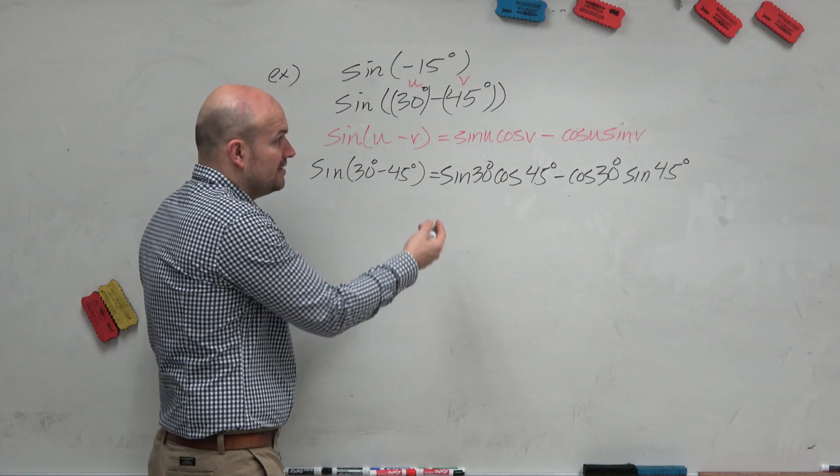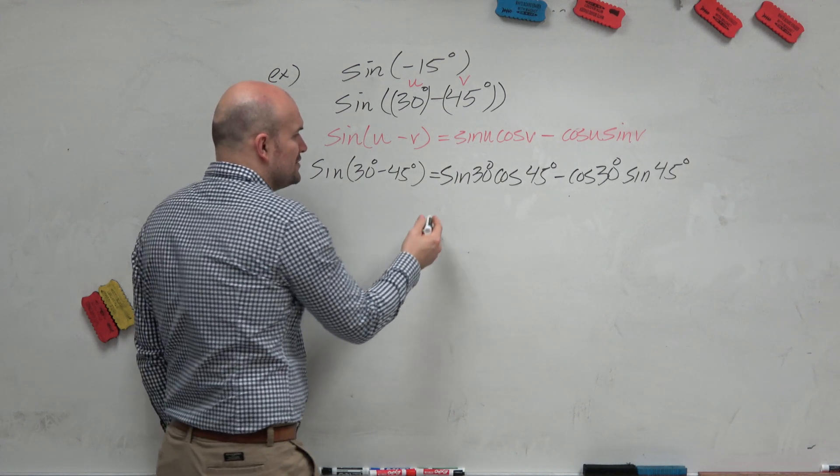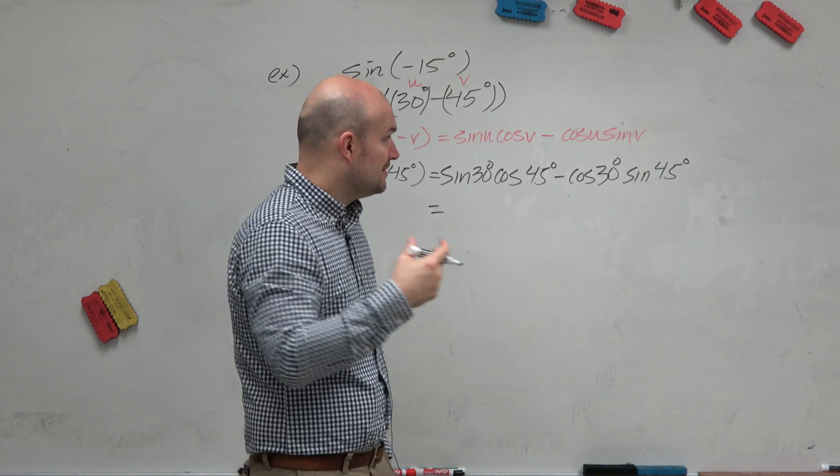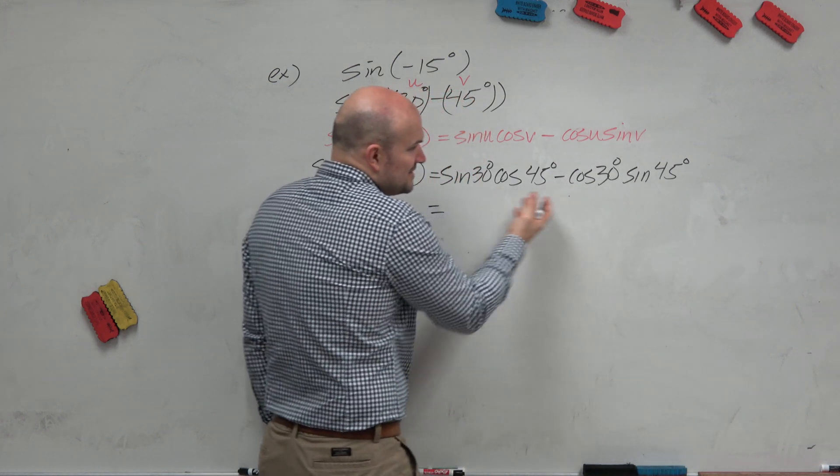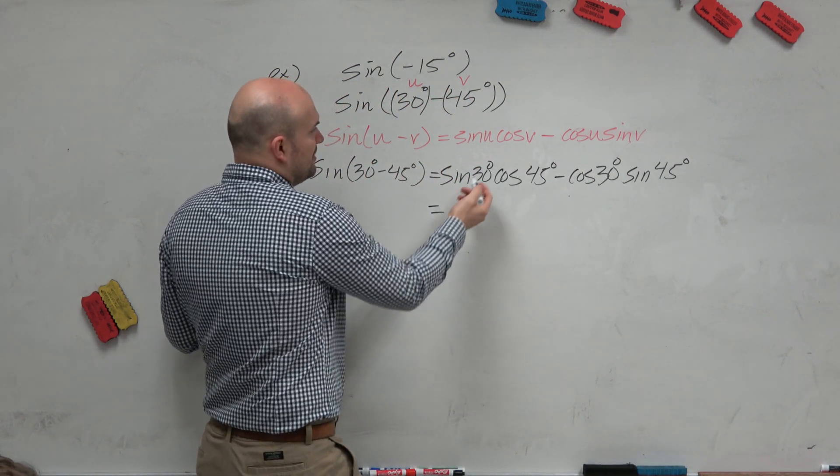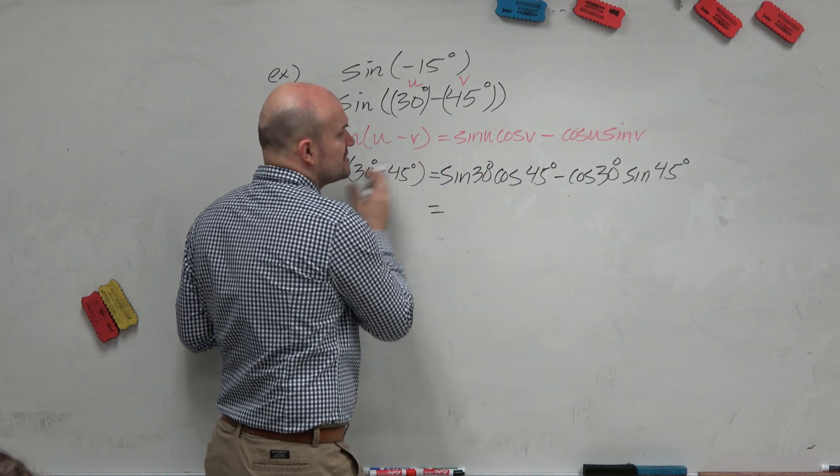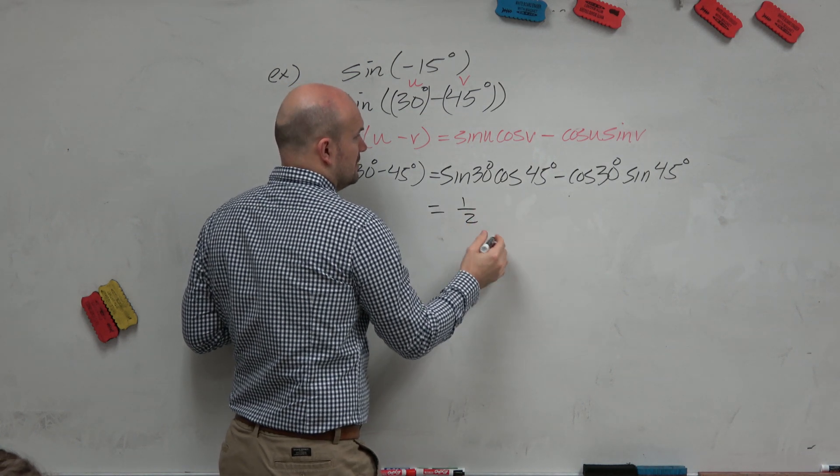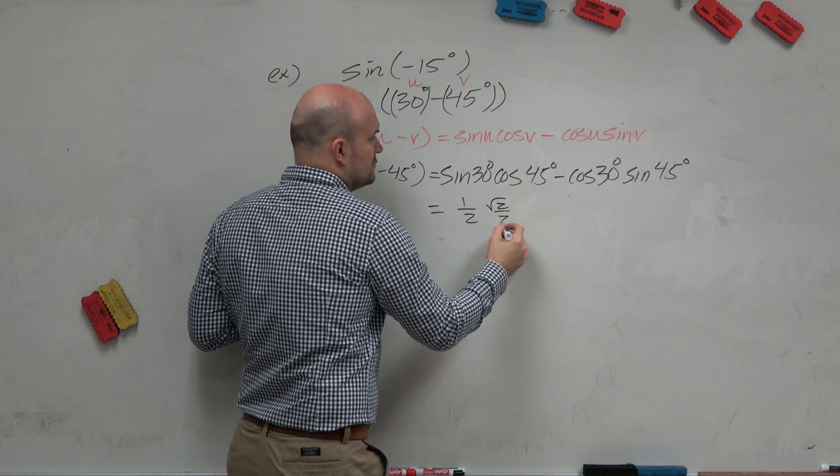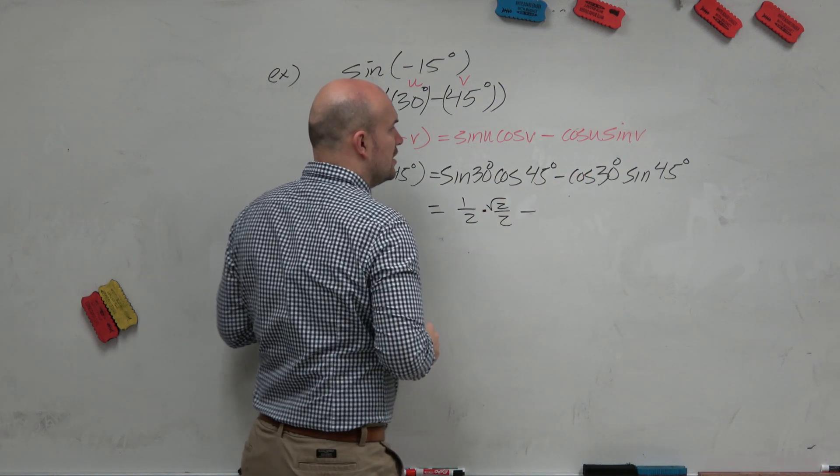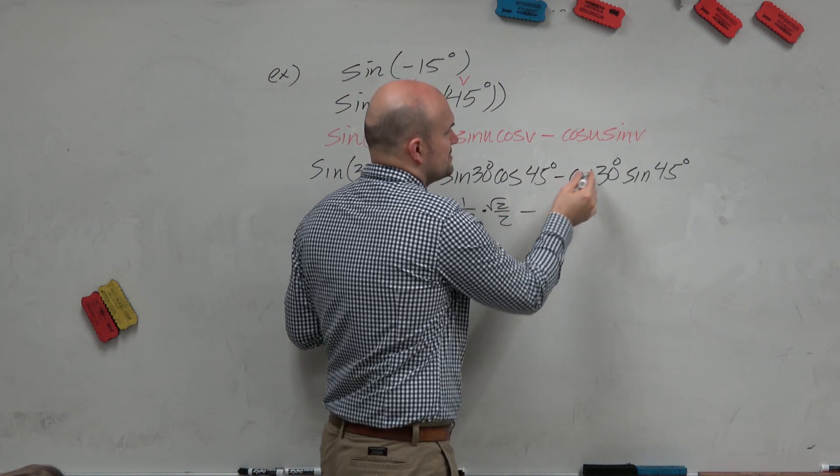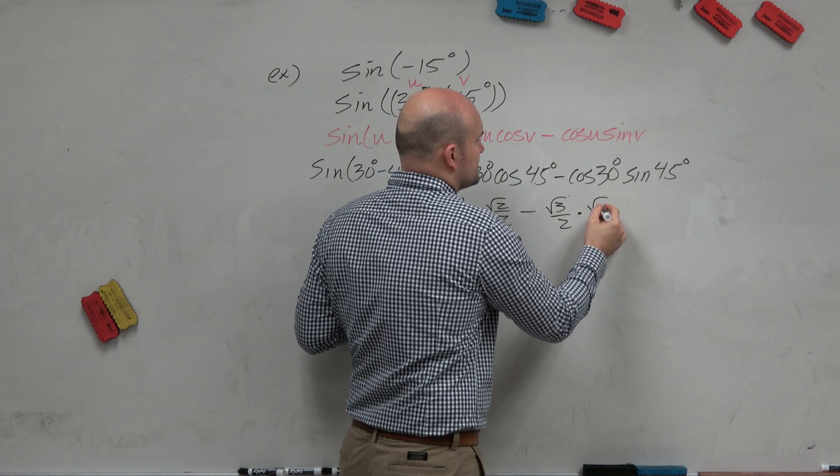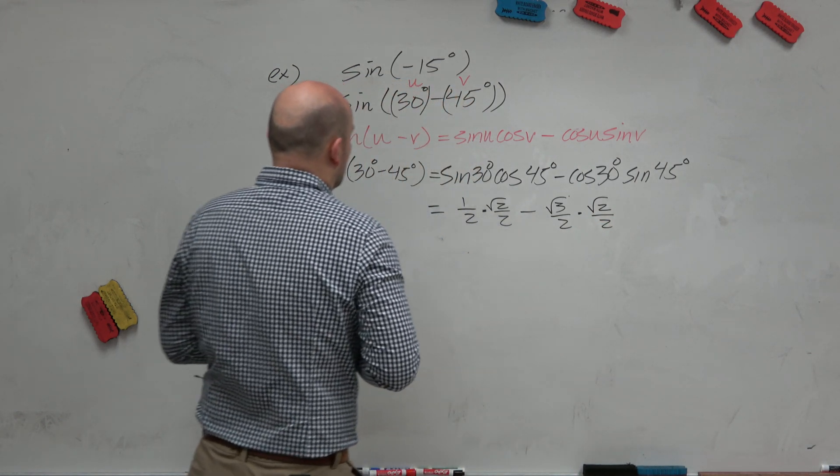So now we just got to evaluate. Remember when I first introduced the unit circle, I said doing the unit circle problems is just one little step. You guys can see we're doing four of these problems. Now obviously there are only two angles, so there shouldn't be that difficult. Sine of 30 degrees is 1 half. Cosine of 45 degrees is square root of 2 over 2. Minus cosine of 30 degrees, which is square root of 3 over 2, and sine of 45 degrees is square root of 2 over 2.